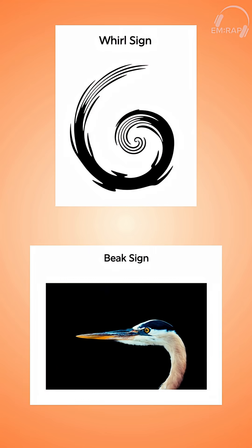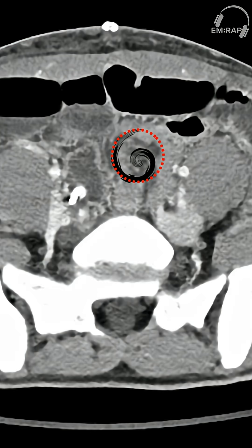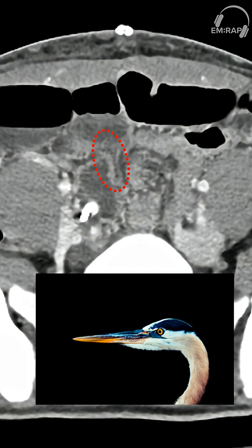I want to show you a couple of other findings you might see on CT scan: the whorl sign and the beak sign. Interestingly, we see both on the same cut of the CT scan. Let's freeze on this cut for just a moment. Here's the whorl sign — this is the twisting of the mesentery into that whorl or swirl shape. And right next to it, we see the beak sign: just like a bird's beak that narrows off to a point, the bowel does that as it narrows off to a transition point. So on the same cut, we have the whorl sign and the beak sign.